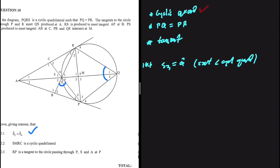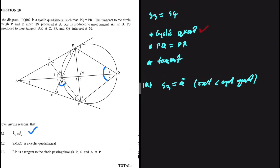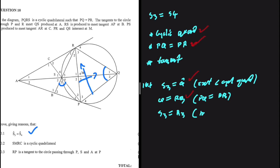Moving to the next keyword: PQ equals PR. PQ subtends angle R3, and PR subtends angle Q, so Q is equal to R3 because PQ equals PR — equal chords subtend equal angles. Since S3 equals Q and Q equals R3, it follows that S3 equals R3, because they are both equal to Q.